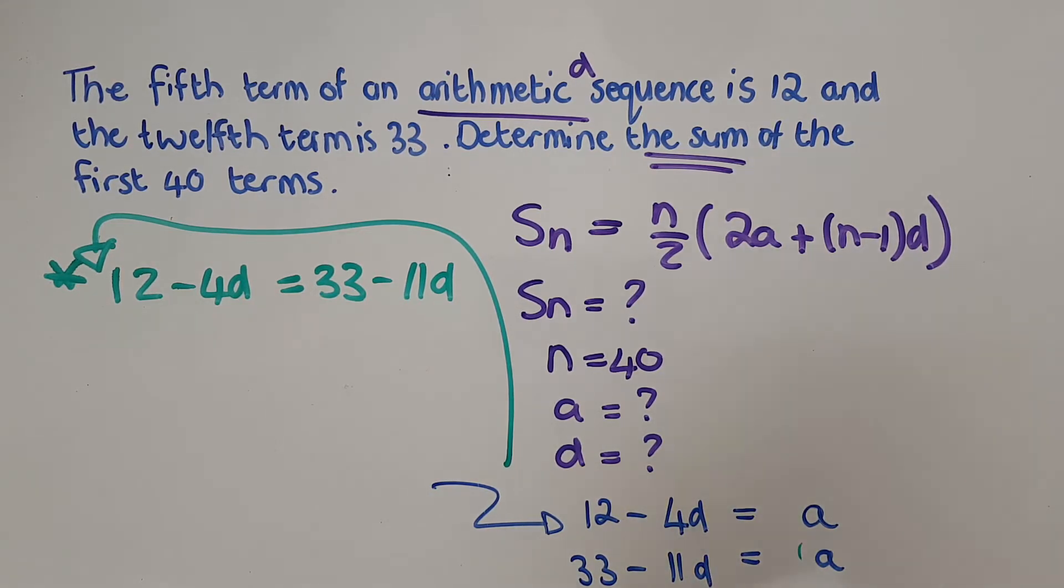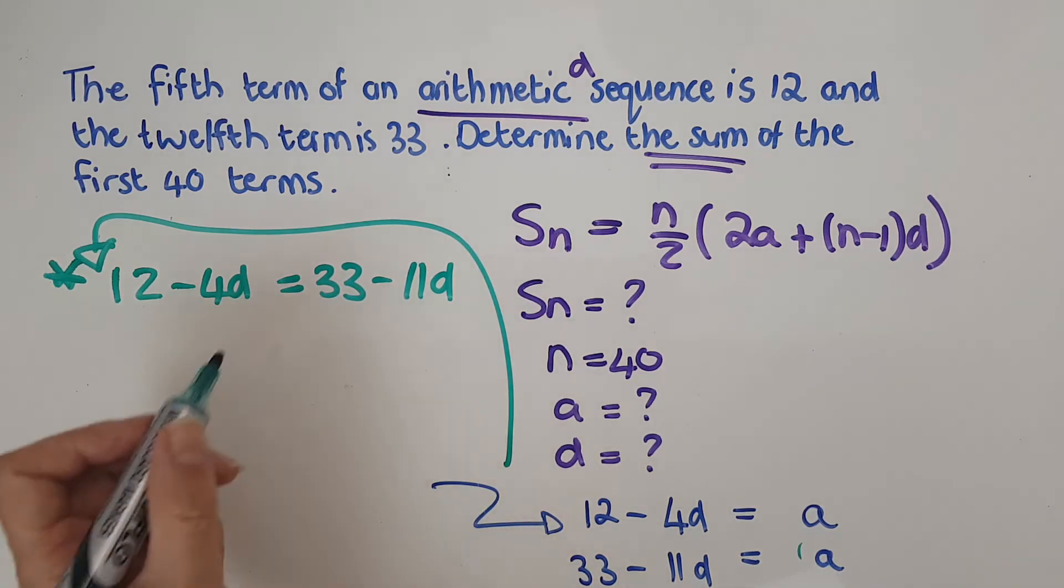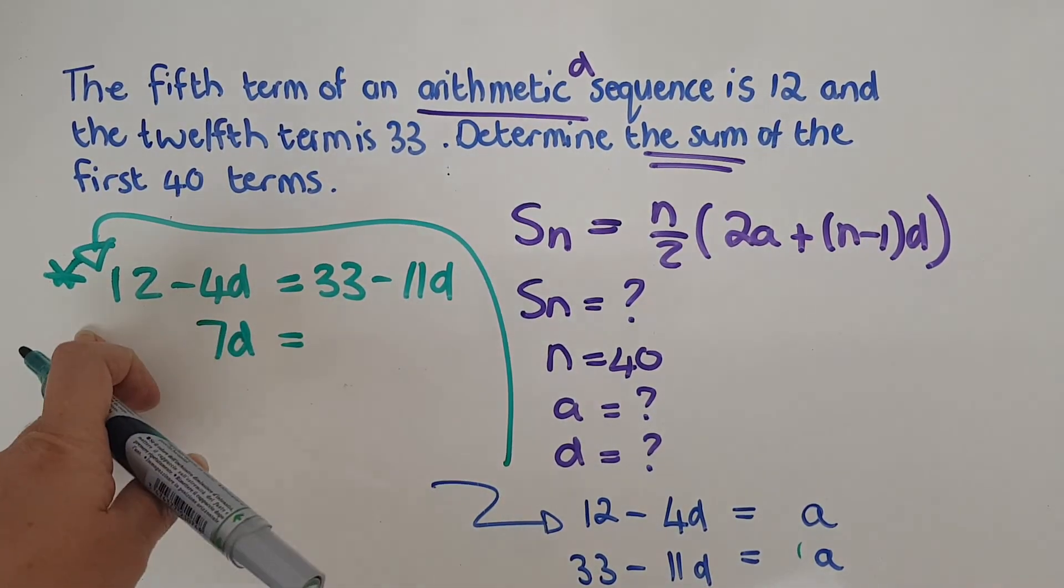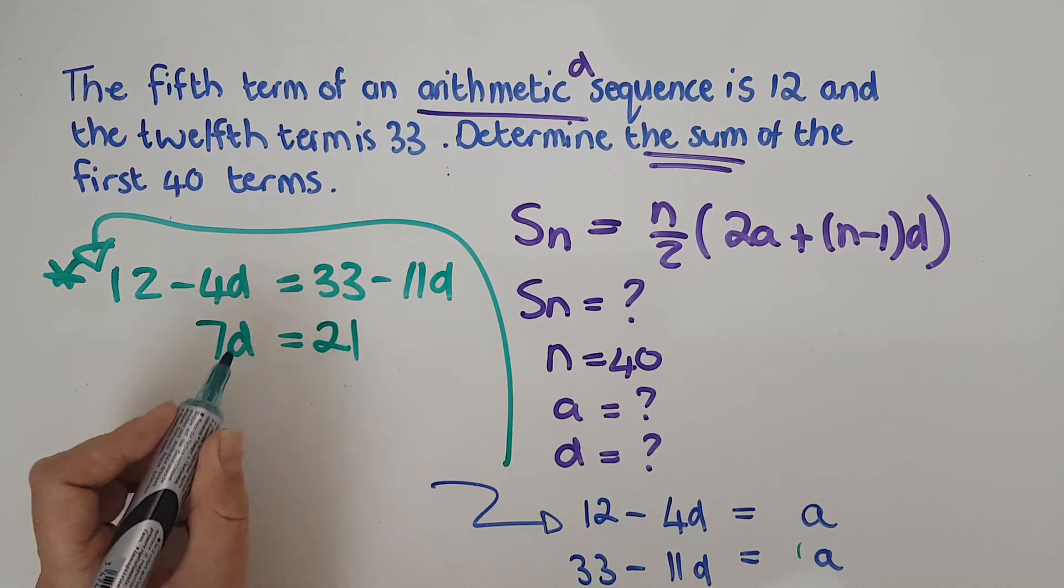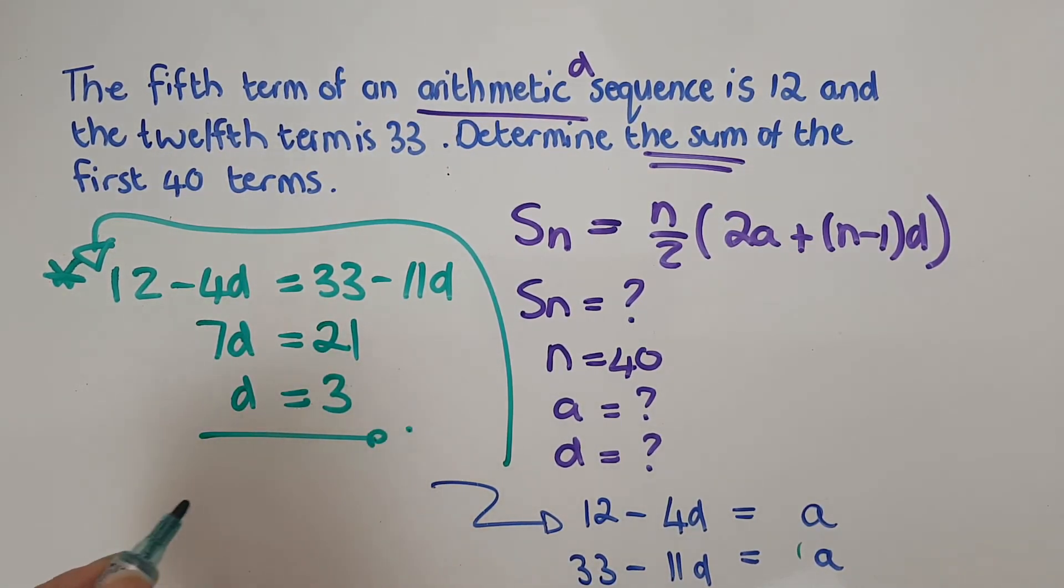Now I'm just going to solve. I'm going to put that on that side and end up with negative 4 plus 11, so I've got 7d. Then the 33 minus the 12 gets me to 21, so d equals 3.